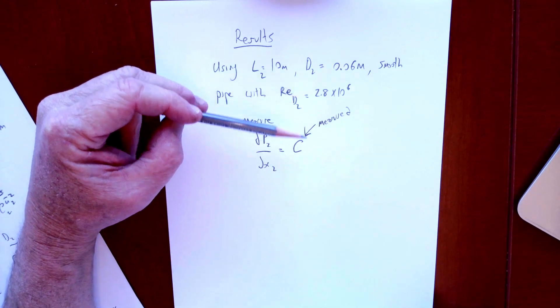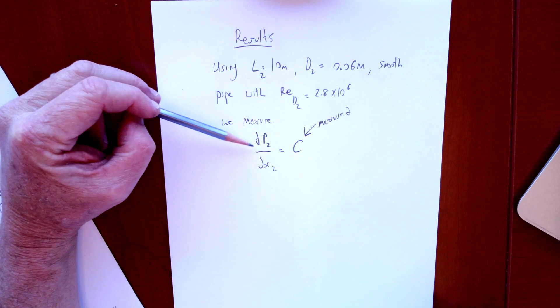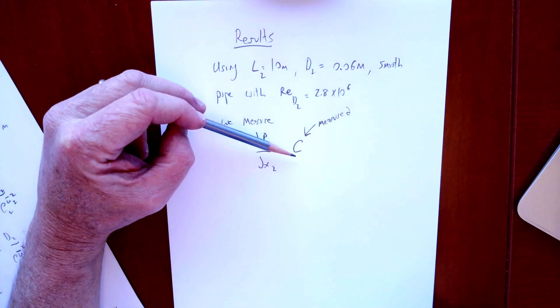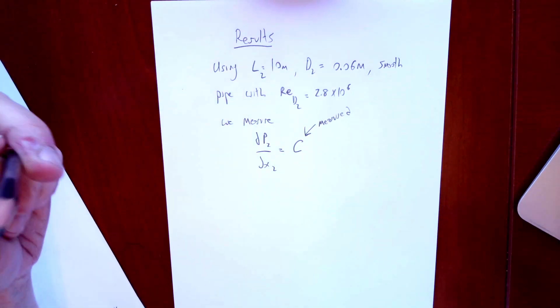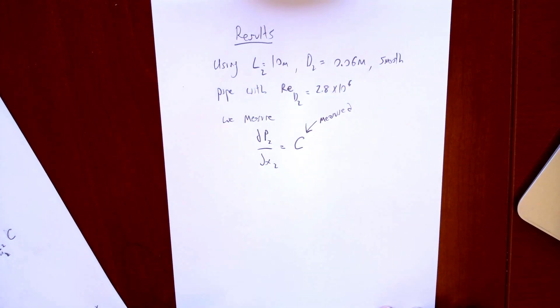And then we take a pressure measurement. We measure how much pressure that requires and we get the DP/DX2, which we can measure and we get a value. Call it just C. Doesn't matter what it is right now, we're just going to see how we would use that.